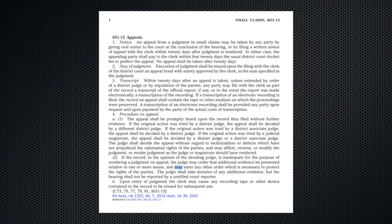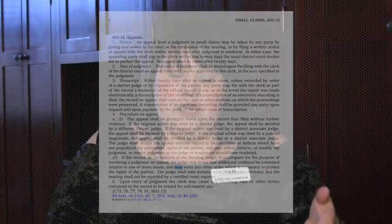Essentially, here's how it works. The party who wants to appeal needs to fill out the small claims form. It's a standard form from the Supreme Court and file that with the district court as a new case, generally or within the small claims case. You may want to check with your local clerk, and they're going to have to pay a $185 filing fee.